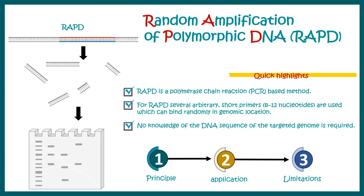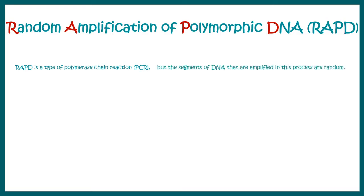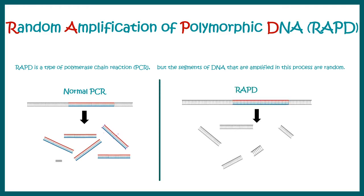RAPD is a polymerase chain reaction based technique, but it is slightly different from standard PCR because the segments that are amplified are kind of random. In normal PCR we use a specific primer to amplify a specific portion of the DNA, but in RAPD the amplification is random and several different length products are generated.